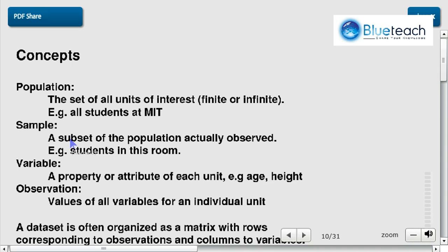So the sample is a subset of the population actually observed. So in this example, the population is all students at MIT. Because you don't have the time to go ask every student at MIT what data he's holding, then you're going to do it on a sample. The students in this room.